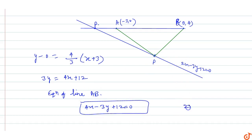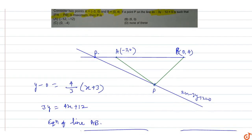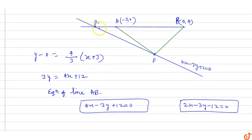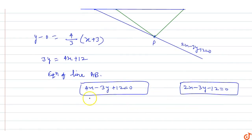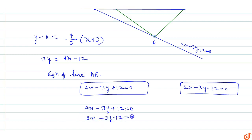Point P lies on line AB. If mod of PA minus PB is maximum, then P lies on line AB. The intersection of these two lines gives us point P. Equation of AB: 4x minus 3y plus 12 equal to zero, and the other line: 2x minus 3y minus 12 equal to zero.